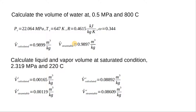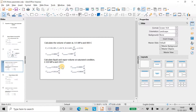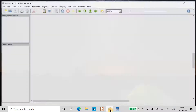Now let us take a second demonstration: calculating the liquid and vapor volumes at saturated conditions for water. We choose a pressure of 2.319 MPa and a temperature of 220°C. I have solved this problem in WX Maxima, so let us look at the calculations.